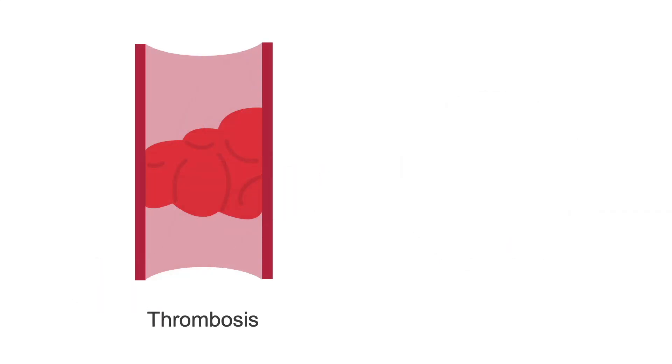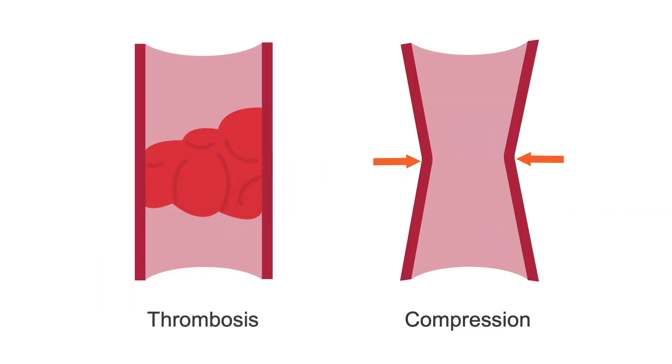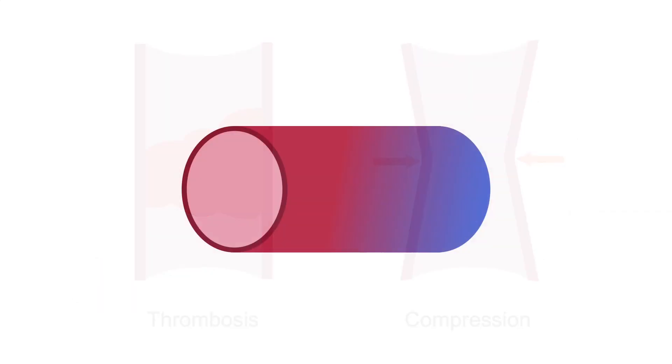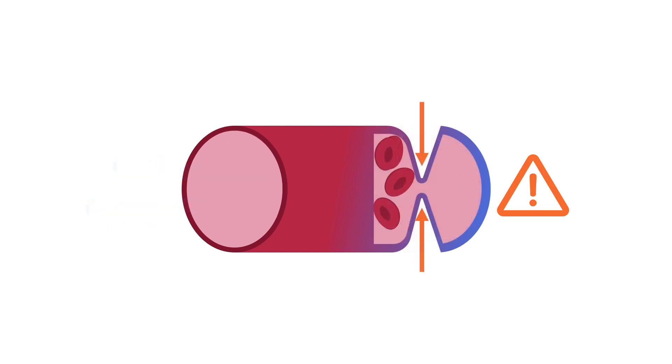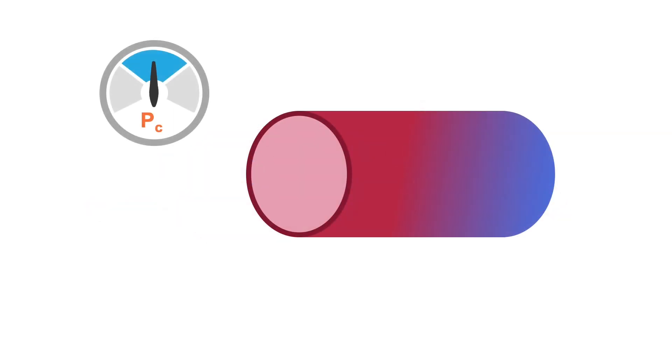Next, let's talk about venous thrombosis or compression. Imagine our capillary schematic. There is still an arterial inflow, but if the outflow is obstructed due to thrombosis or compression, this will increase capillary hydrostatic pressure, which in turn increases the net movement of fluid out of the capillary.